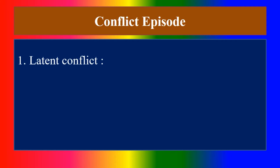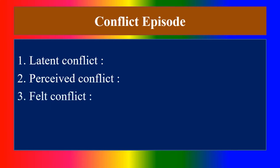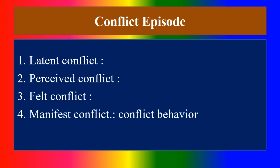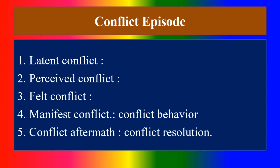Types of conflict stages: first, latent conflict — invisible, which is in the mind. Second, perceived conflict — perceived by sensory organs. Third, felt conflict — feel about the conflict. Fourth, manifest conflict — conflict behavior. Fifth, conflict aftermath — which means conflict resolution.